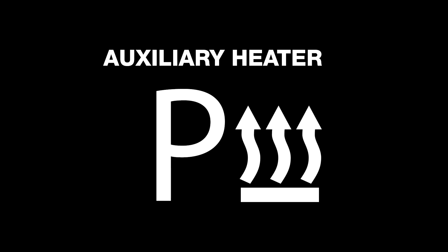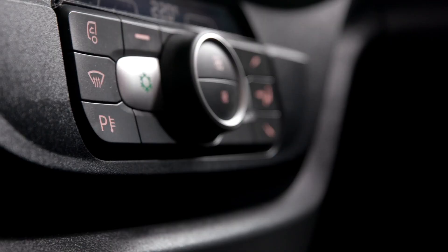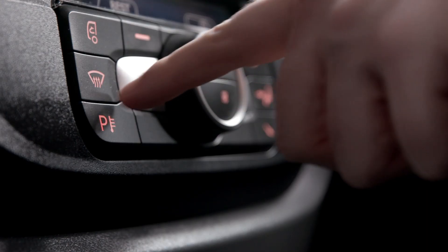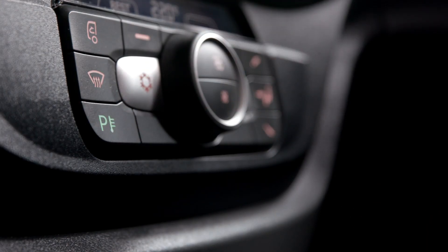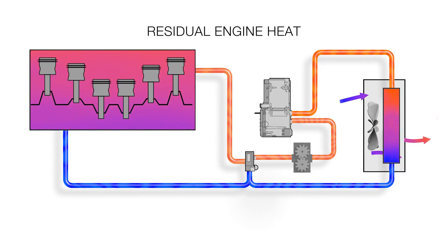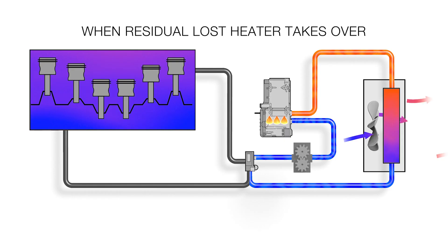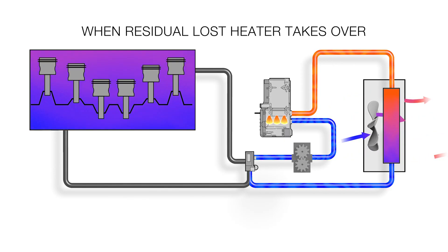Now let's take a look at the auxiliary or night heater, which is optionally available. For rest periods longer than 45 minutes or when the engine is cold, you will need to engage the auxiliary heater to warm the cab. This is done by simply pressing P. This will initially use any residual heat in the coolant before engaging a separate diesel-powered heater to maintain the temperature of the coolant in the heater matrix, bypassing the engine.